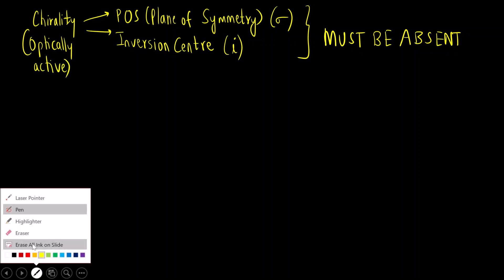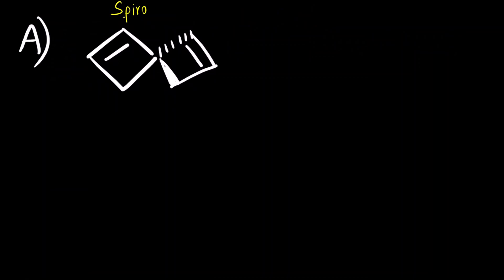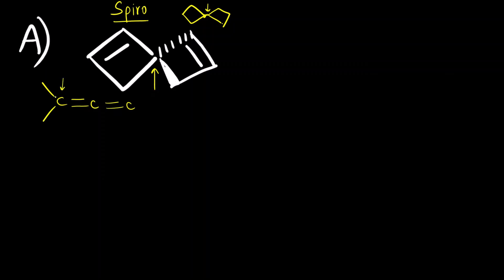Now let us see all the molecules one by one. The first one is option A — these are spiro compounds, where two rings are attached at a single point of attachment, that is at one single carbon. Here you can see two four-membered rings attached at a single carbon. These are similar to allenes. In the allene system, two groups on one side are in the same plane.